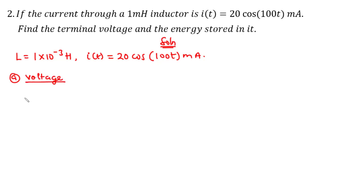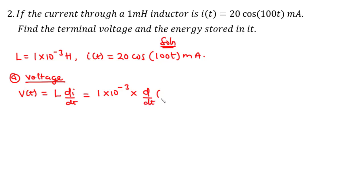We want to find the terminal voltage — the voltage across the inductor. As before, v(t) = L·(di/dt). Substituting L = 1 × 10^(−3) and differentiating i(t) = 20·cos(100t), we pull out the constant 20, giving 20 × 10^(−3) × d/dt[cos(100t)].